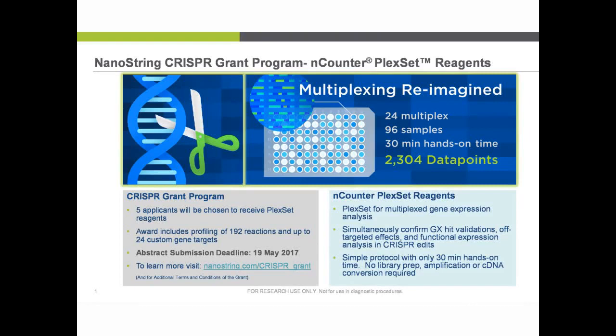NanoString is currently offering a CRISPR grant program. They will choose five applicants, and winners will receive 192 reactions of 24 custom gene targets. The abstract submission deadline is the 19th of this month, so there's not a lot of time. For more information, visit NanoString's website at nanostring.com and look up CRISPR grant.